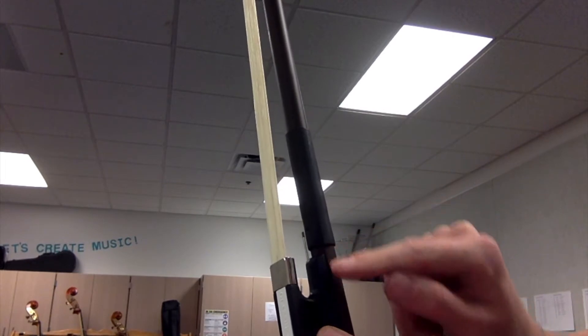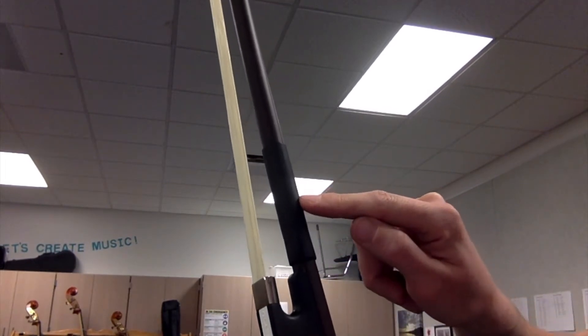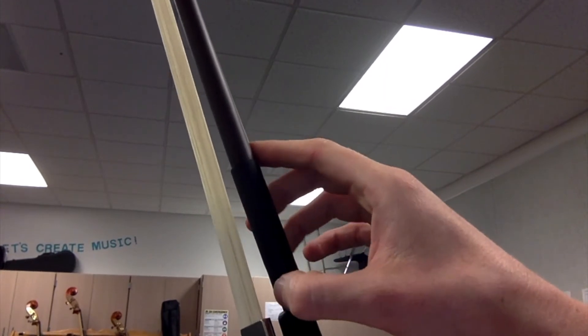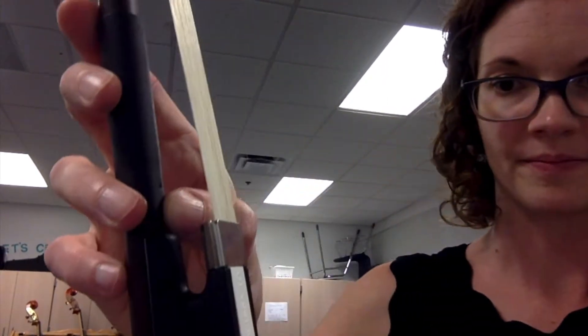So some of you might have a big gap between the frog and your winding. Some of you might not, but either way, that thumb is always going to go right below the stick above the frog.